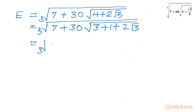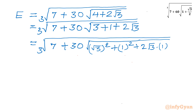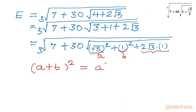We can write this as cube root of 7 plus 30 times square root of root 3 whole squared plus 1 whole squared plus 2 times root 3 times 1. Now if you see, this is recalling the identity a squared plus b squared plus 2ab, where a is root 3 and b is 1. The identity is a plus b whole squared equals a squared plus b squared plus 2ab.